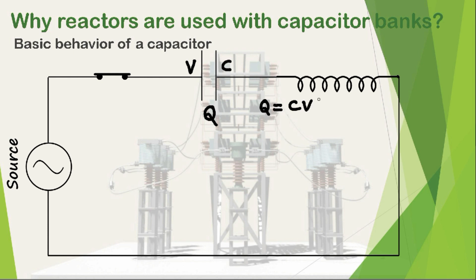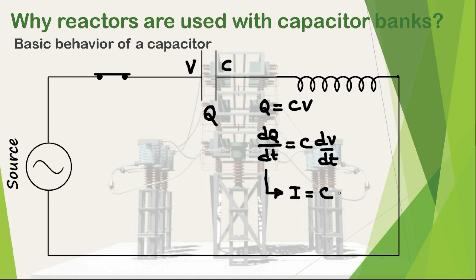If we differentiate both sides of this equation, we will get dQ/dt equals C times dV/dt. Now, what is dQ/dt? dQ/dt is nothing but current. So we can write current I equals C times dV/dt. This I is nothing but the current flowing through the capacitor bank during switching on, and this is called the charging current of the capacitor.